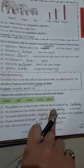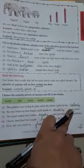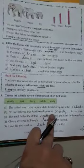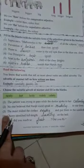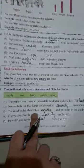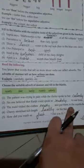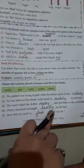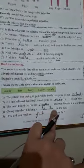First one: The patient was crying in pain while the doctor spoke to her calmly. Second: No one believed that Ranjit could speak so rudely. Third: The maid folded the clothes neatly and put them in the wardrobe. Fourth: Cherry stretched full length lazily on the bed. Fifth: How did you reach so fast, did you fly?